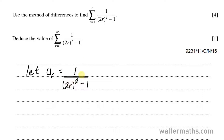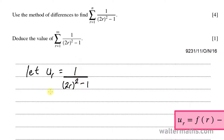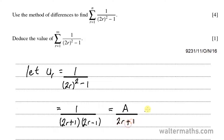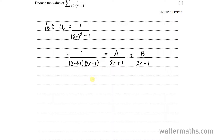Let U sub R equal 1 over (2R² − 1). The goal is to express U sub R as a difference of two functions. To do that, we break U sub R into its partial fractions. So U sub R can be expressed as 1 over (2R+1)(2R−1), which in partial fractions takes the form A over (2R+1) plus B over (2R−1), where A and B are constants. This gives the identity: 1 ≡ A(2R−1) + B(2R+1).